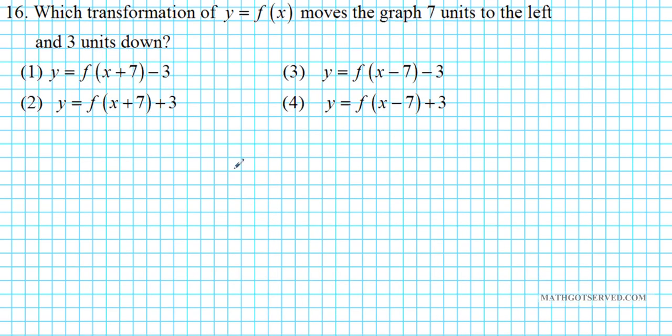Alright, let's take a look at problem 16. It says, which transformation of y equals f(x) moves the graph seven units to the left and three units down? So one thing you want to remember is that for horizontal translations, left or right, the sign is actually the opposite of the indicated transformation or movement.